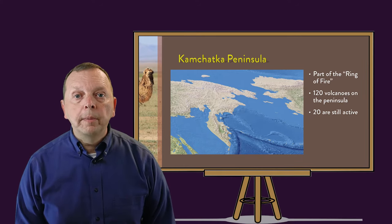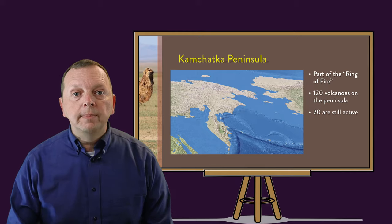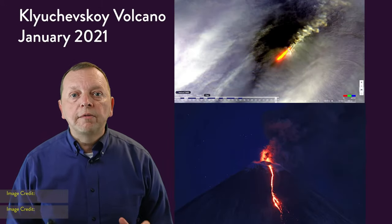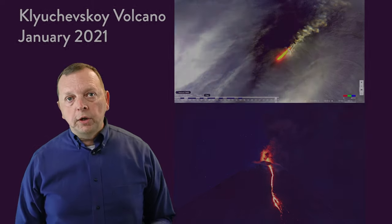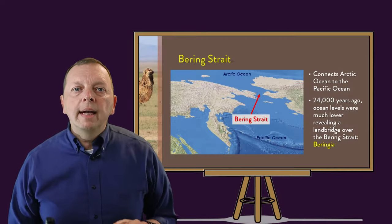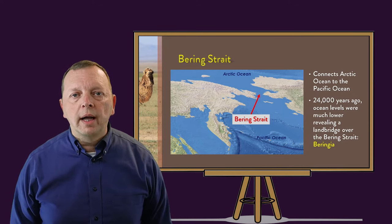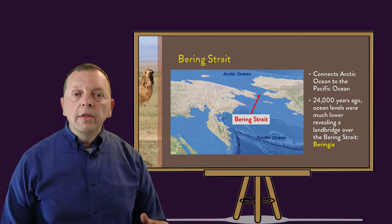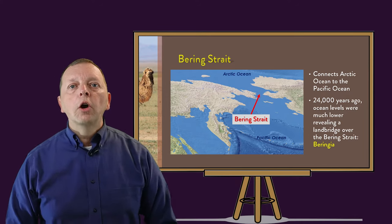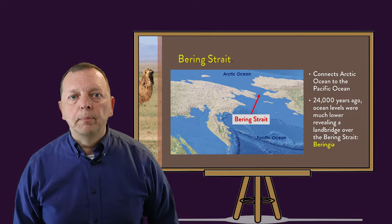120 volcanoes are found on the peninsula and 20 of them are actually still active. In fact, right now as I'm taping this, the Klyuchevskoy volcano is erupting even as I'm speaking. North of the Pacific Ocean, separating Asia from North America, is the Bering Strait. At its narrowest point of only 53 miles wide, it separates the two continents. It is also over the Bering Strait that 24,000 years ago, the first peoples to come to the Americas crossed when ocean levels were much lower and the land bridge was exposed.